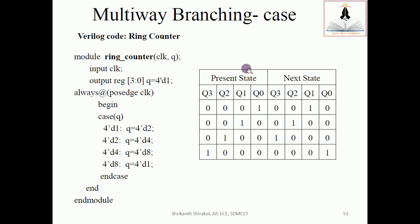Here is a ring counter truth table. Let us understand the truth table first. The initialization has been done as 0001, where q0 is the LSB and q3 is the MSB. This is the present state and this is the next state. When you have an initialization of 0001, after the first positive edge is encountered, your next state would be 0010.